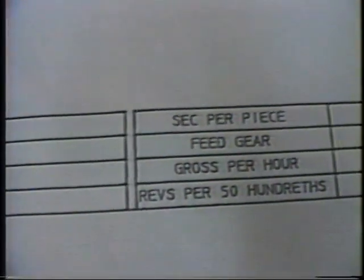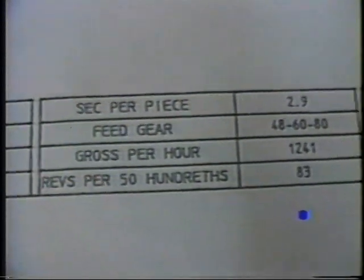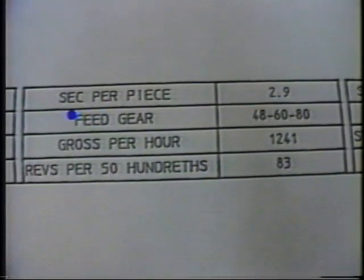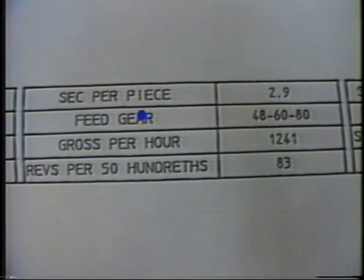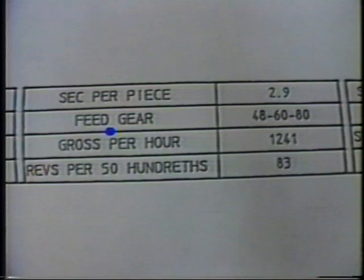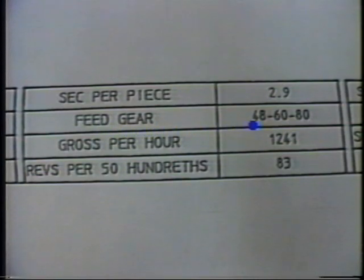Moving to the right, we see the cycle time for production listed as seconds per piece. This is the total production time including index time. The feed gear arrangement used to arrive at the cycle time is listed with the required idler. This arrangement will be discussed further in Tape 6.